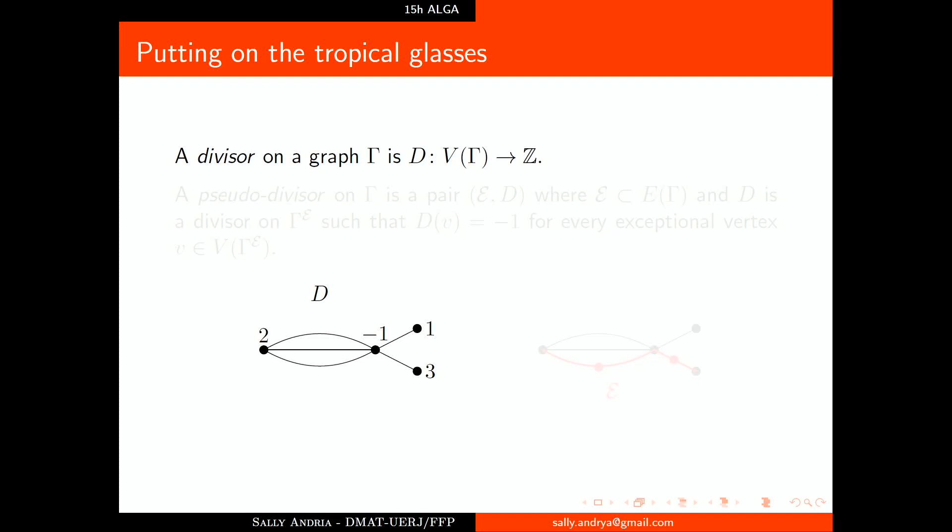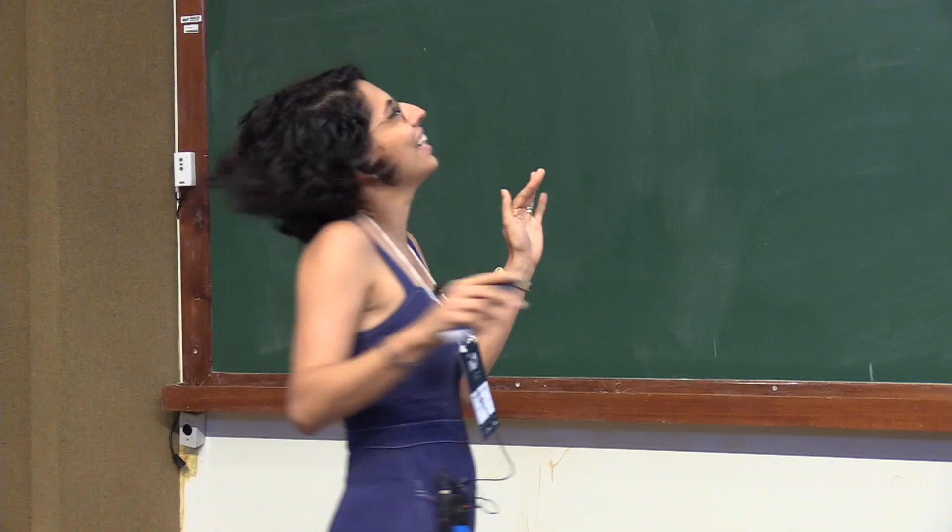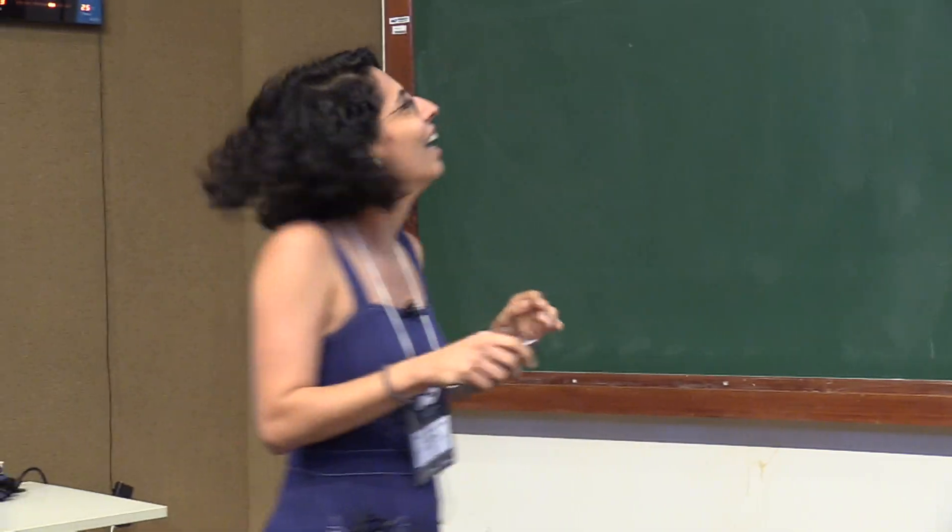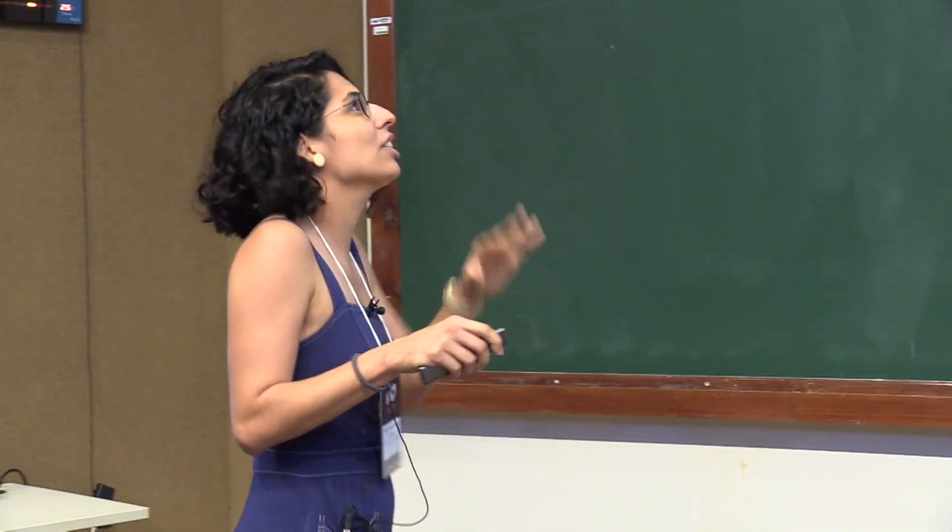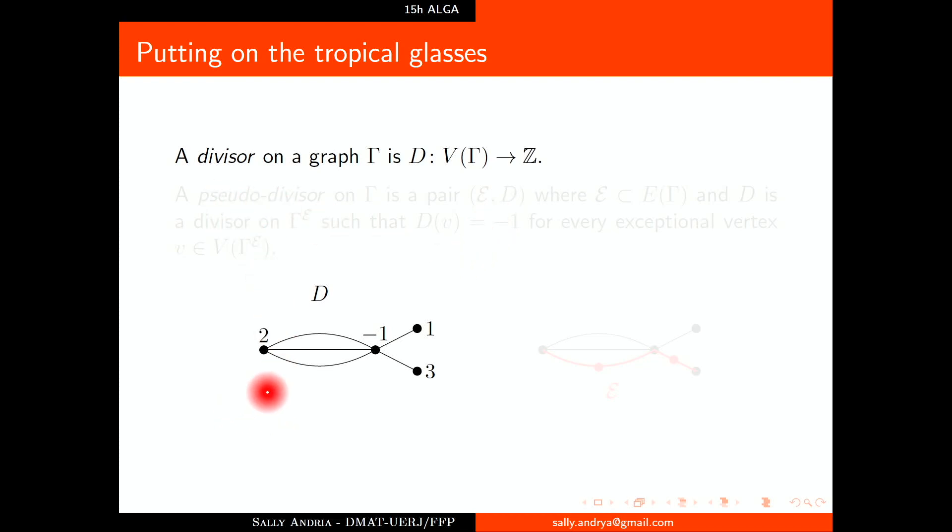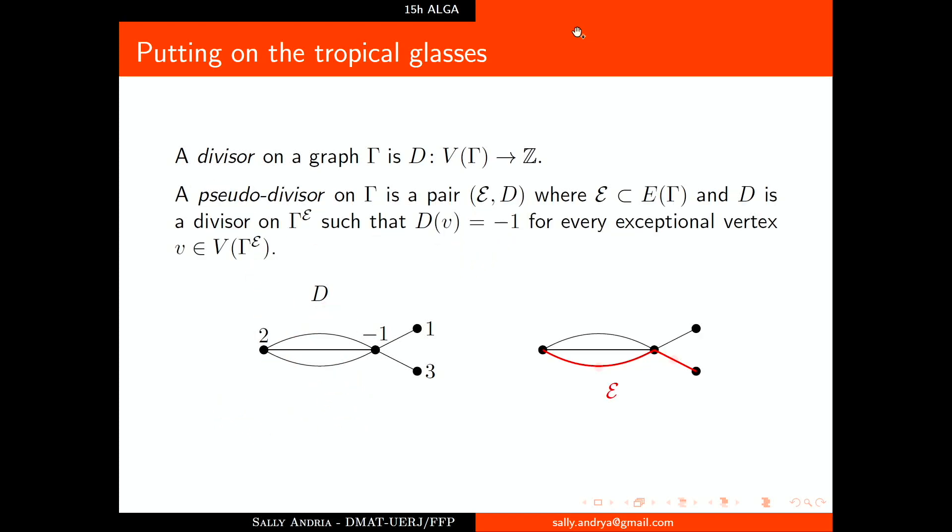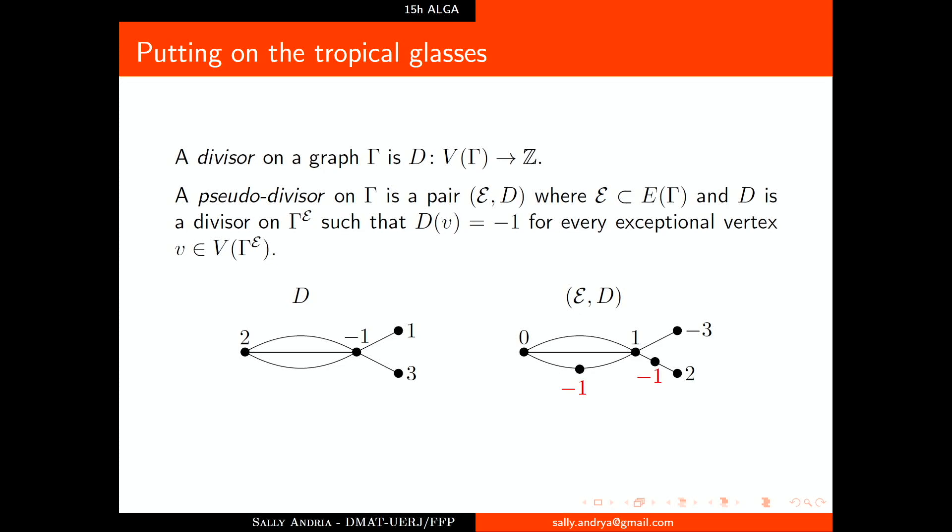We need much more things to explain all the things I would like to talk about, about the tropical Abel map and the tropical Jacobian. But I need you to believe me because we don't have time. So I will just talk about some things. A divisor on the graph is just choosing an integer for the vertices, and a pseudo divisor is to choose a subset of edges and add exceptional vertices.